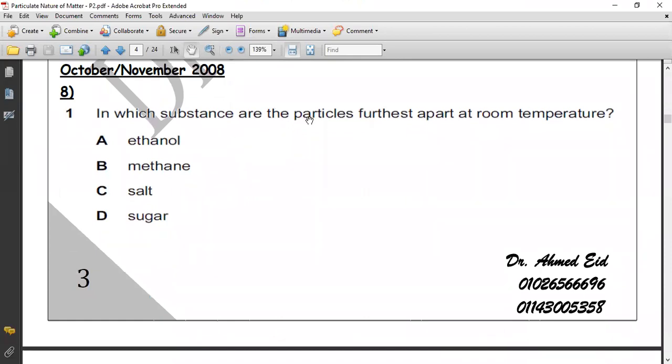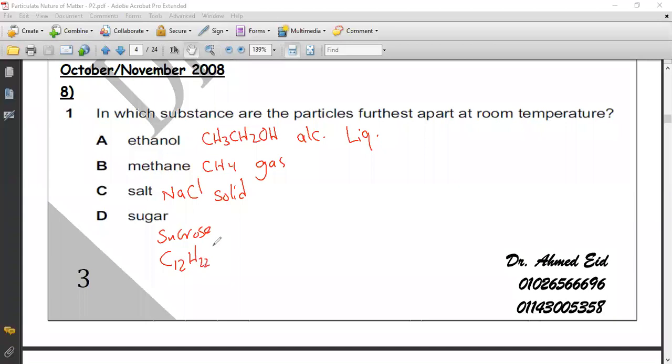Question eight. In which substance are the particles farthest apart at room temperature? To answer this question, we have to know: ethanol CH3-CH2-OH, which is alcohol, liquid. Methane CH4, which is gas. Salt like sodium chloride, which is solid. Sugar, also like glucose or sucrose C12-H22-O11, sucrose also solid. So getting back to the question: in which substance are particles farthest apart? Farthest apart means gas, in gas phase. First one is liquid - incorrect. Gas: B. Solid and solid. So the correct answer will be B.